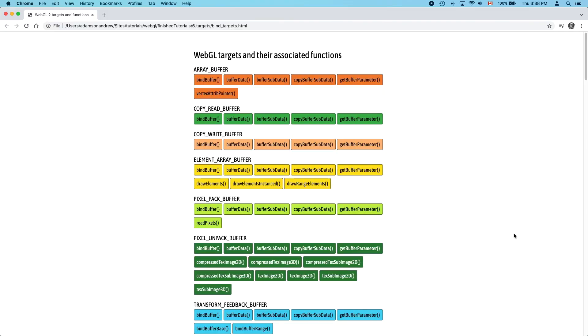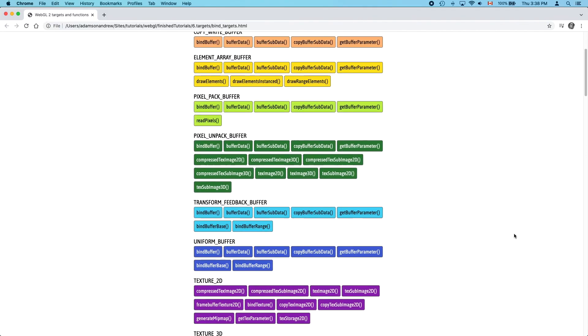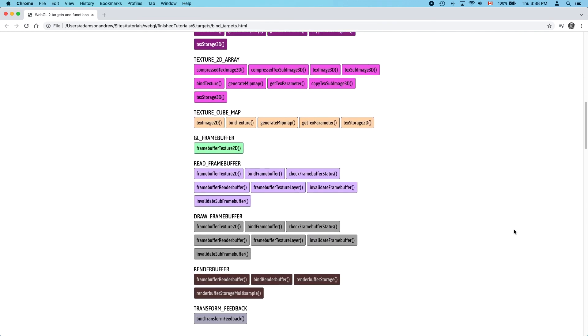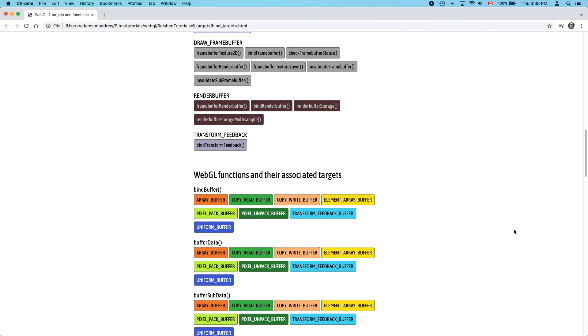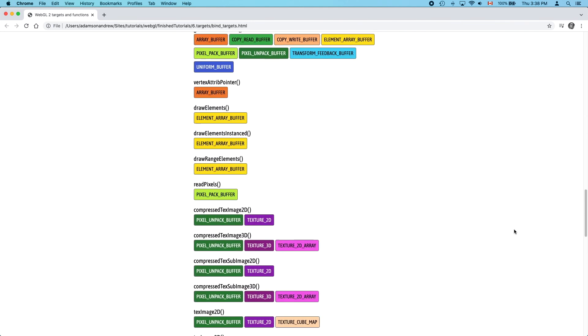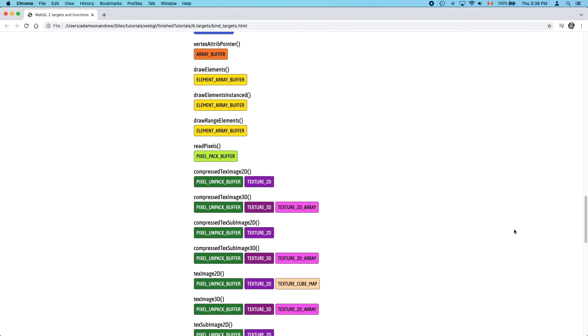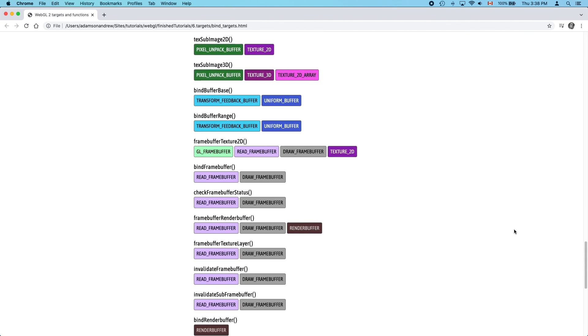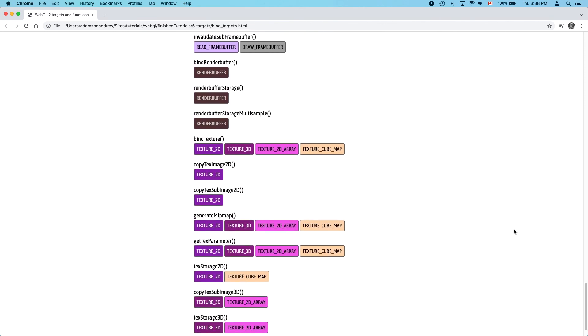I'll close this video with a partial list of targets and their associated functions. I know that there are more, but this is what I could come up with in a couple of hours or more, using the OpenGL reference pages and grep and node and grep again and node again. Anyways, you can download this page at this video series GitHub repo. I really hope that this helped.